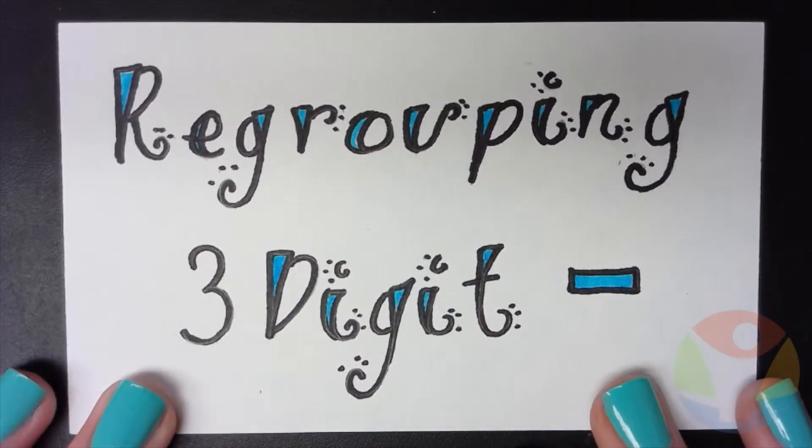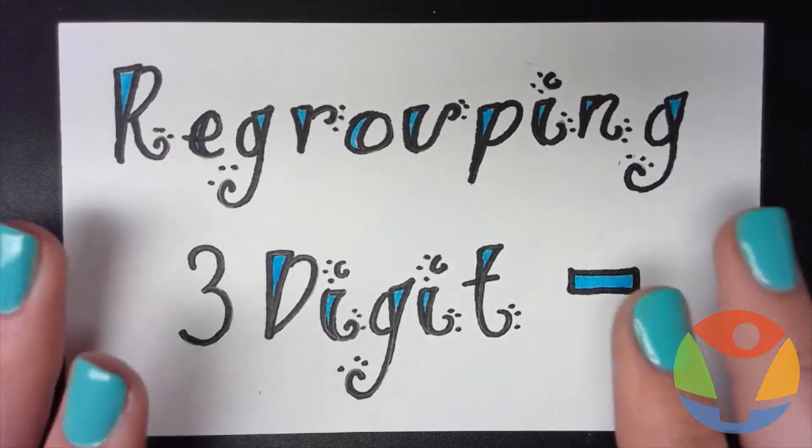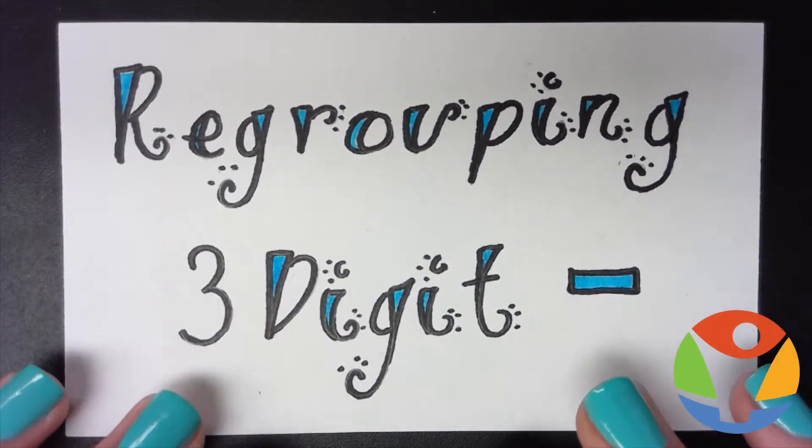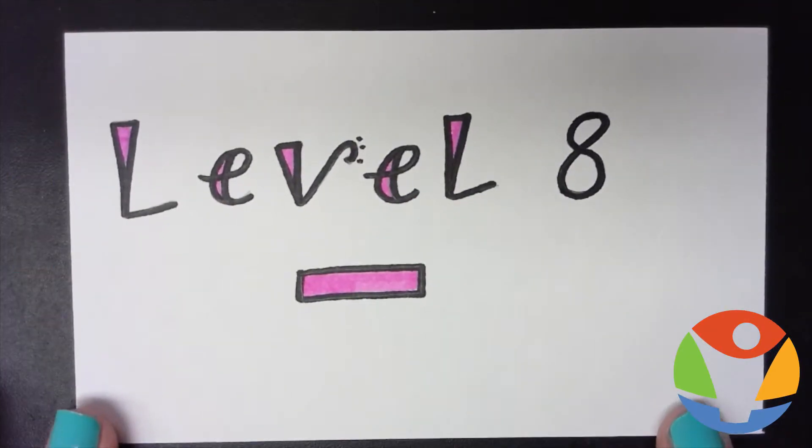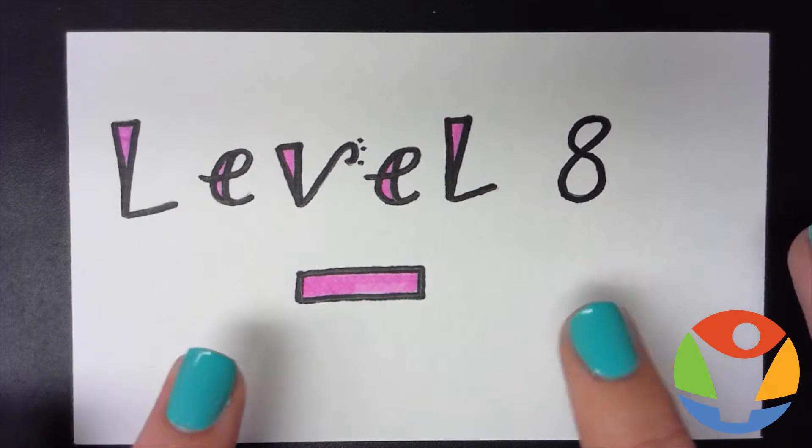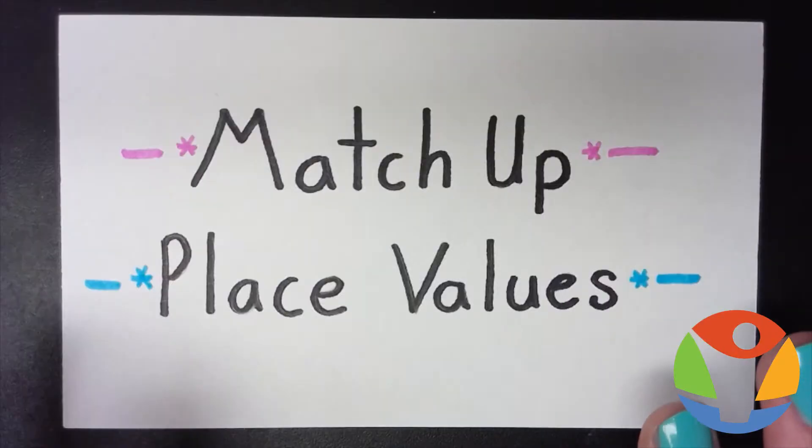Hey guys, so in this video we are going to learn how to use regrouping while subtracting three-digit numbers. This is a level 8 subtraction video, so you should practice level 8 after you watch this. The number one rule and first step to any of these problems is to match up our place values.